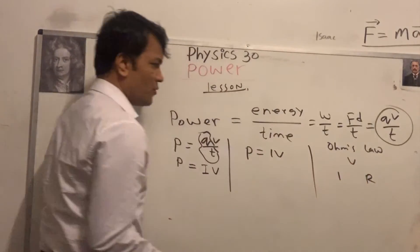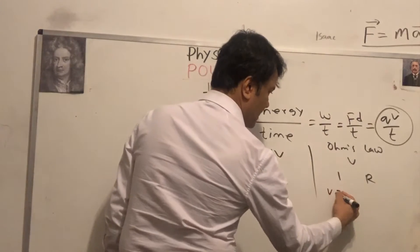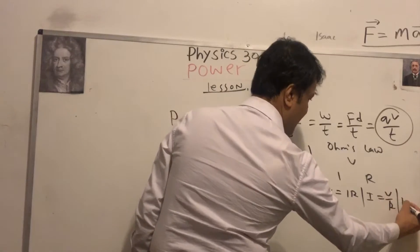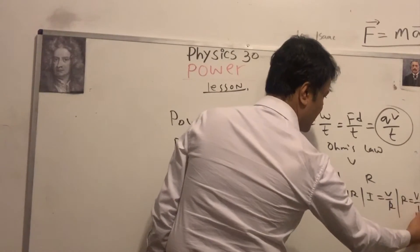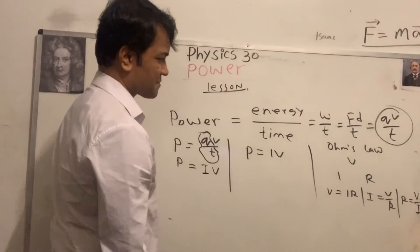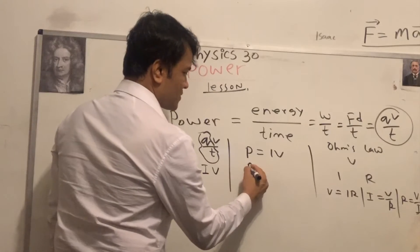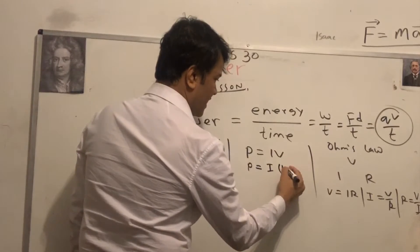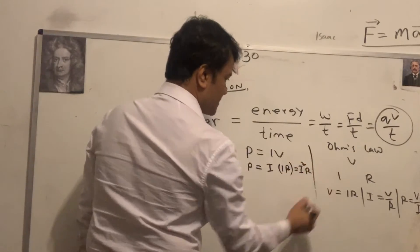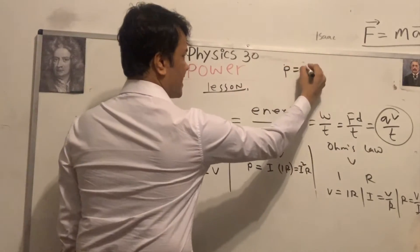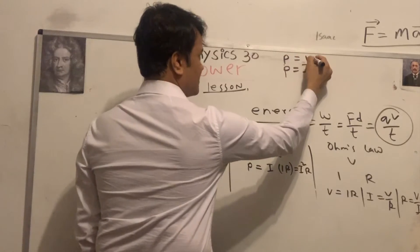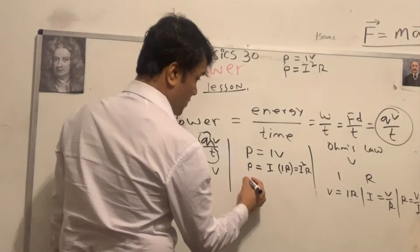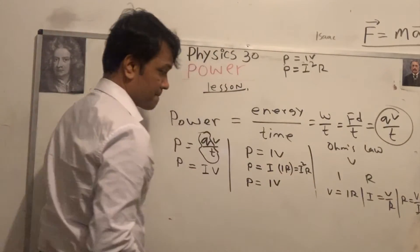P = IV and V = IR. We can substitute: instead of V, write IR, so P = I × IR = I²R. Or instead of I, write V/R, so P = (V/R) × V = V²/R.